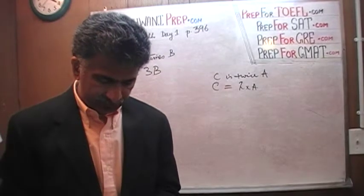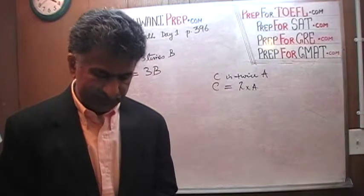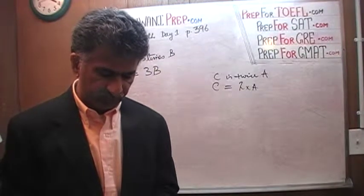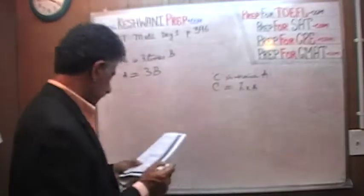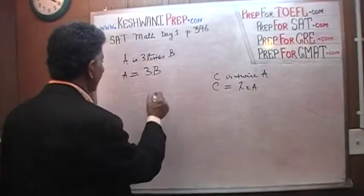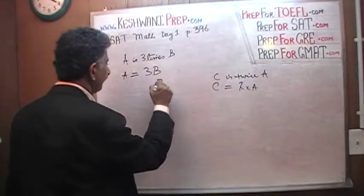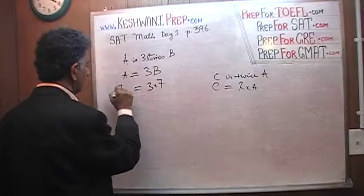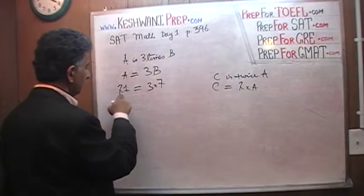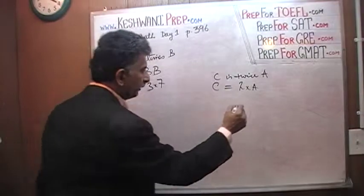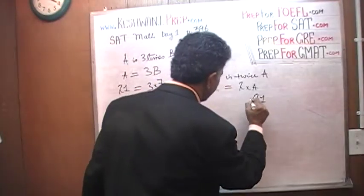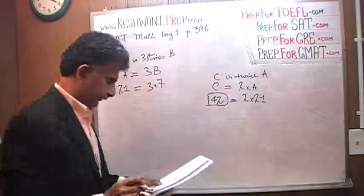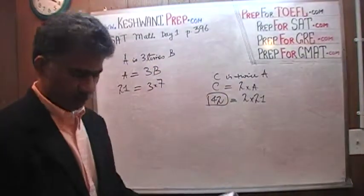Now the punchline: what was train C's speed in miles per hour if B's speed was 7 miles per hour? If B = 7, then A = 3 times 7 = 21. If A = 21, then C = 2 times 21 = 42. So the answer is 42. That's all.